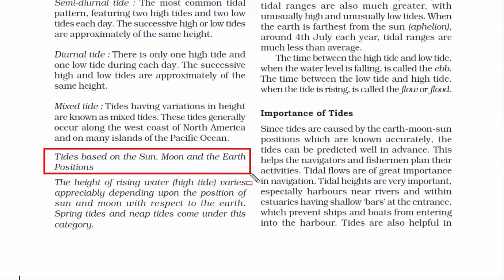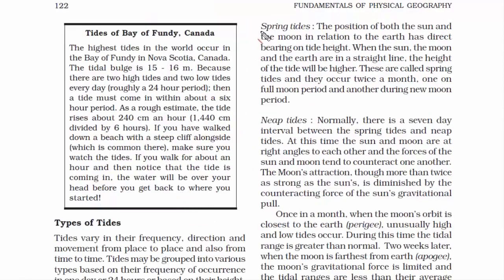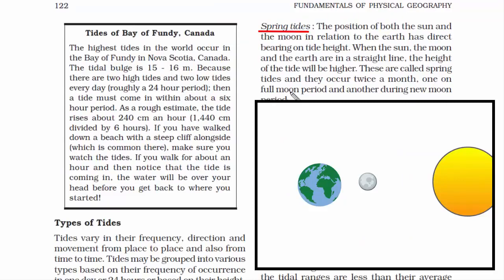Now we look at tides based on the positions of the sun, moon and the earth. The gravitational pull of the moon and the earth acts heavily on the ocean water, creating a bulge in the ocean — that's how tides are formed. Under this category there are two types: the first is spring tides, which occur when the sun, moon and earth are in a straight line.